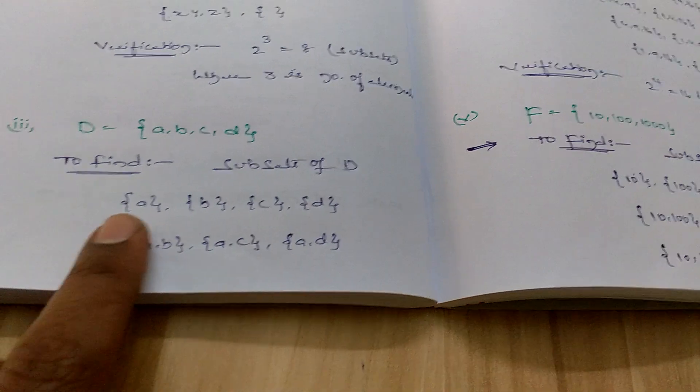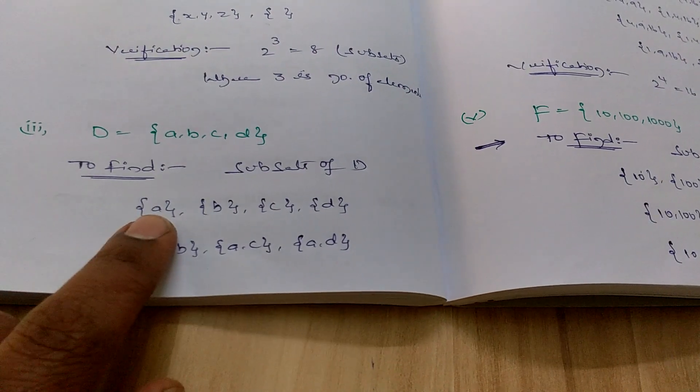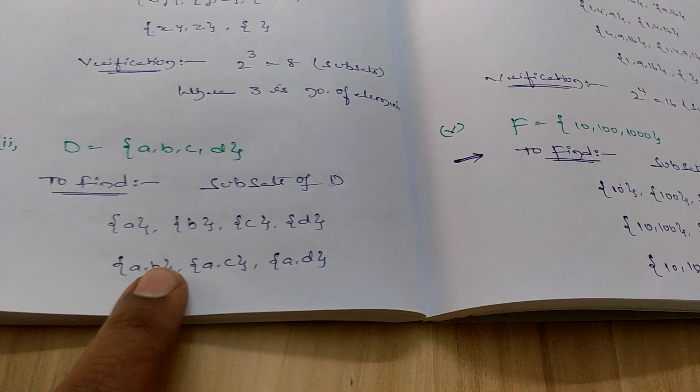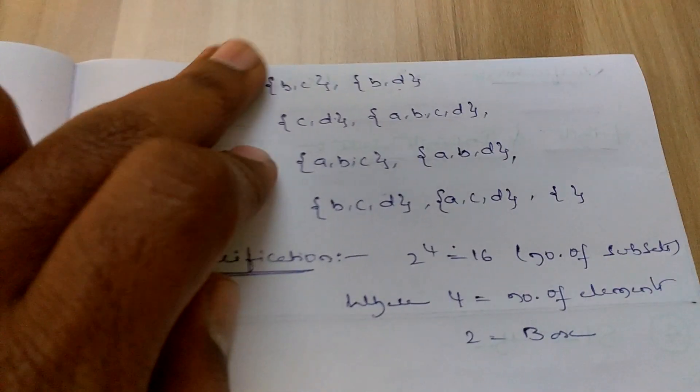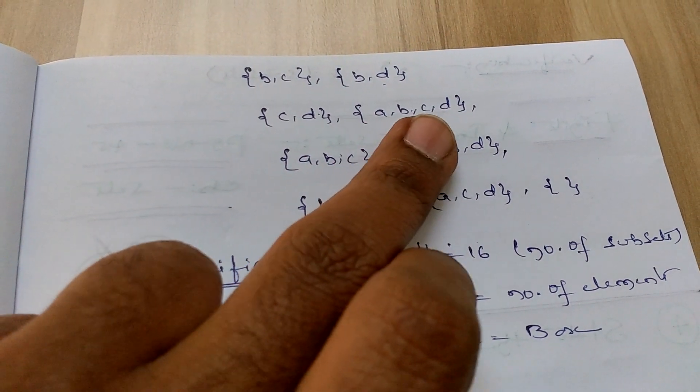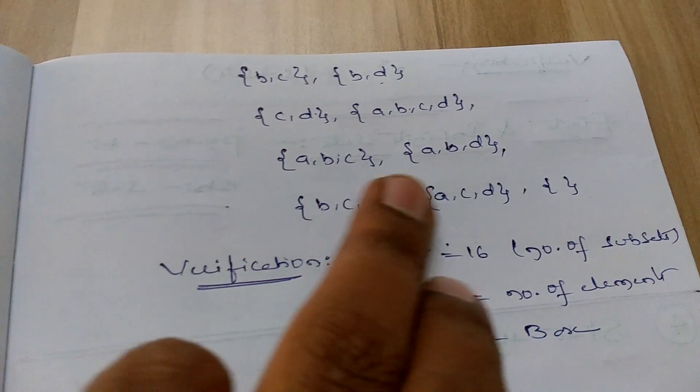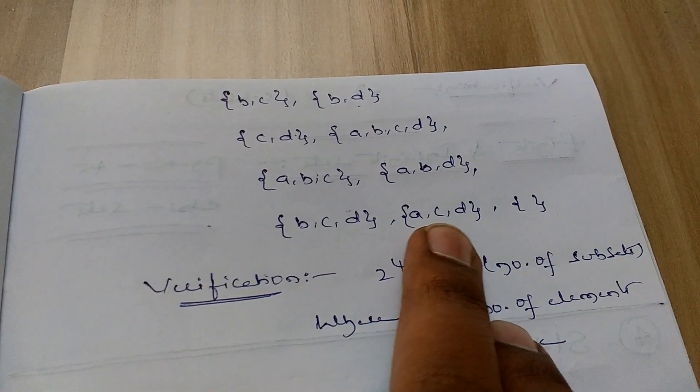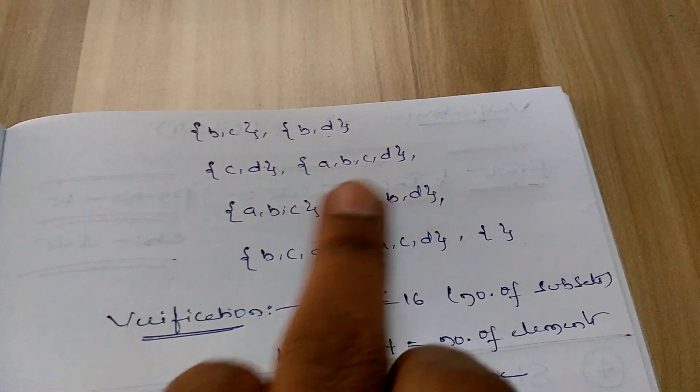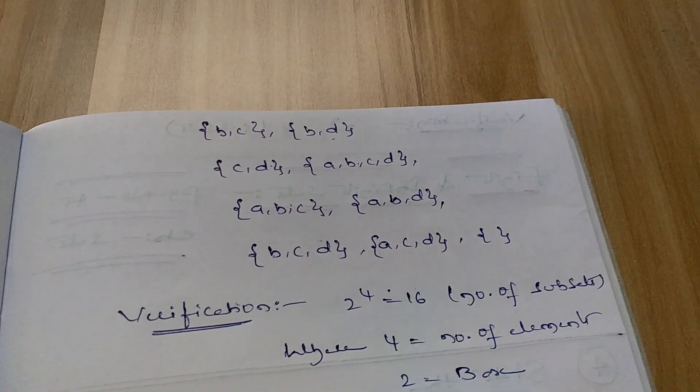Take down all the subsets here: {a}, {b}, {c}, {d}, {a,b}, {a,c}, {a,d}, {b,c}, {b,d}, {c,d}, {a,b,c}, {a,b,d}, {a,c,d}, {b,c,d}, {a,b,c,d}, and the null set. If you count how many you got: 1, 2, 3, 4, 5, 6, 7, 8, 9, 10, 11, 12, 13, 14, 15, 16.